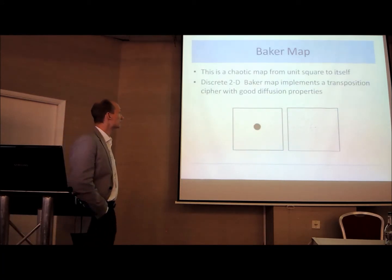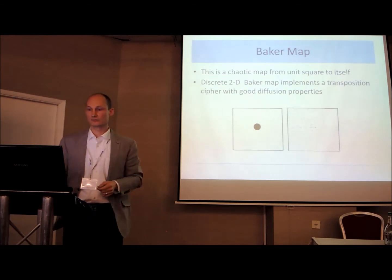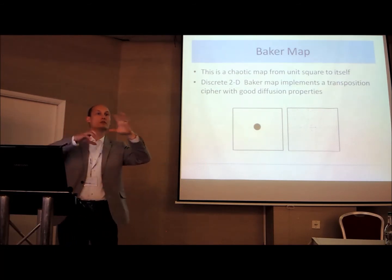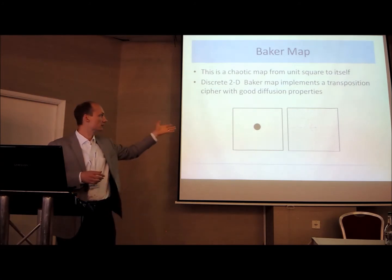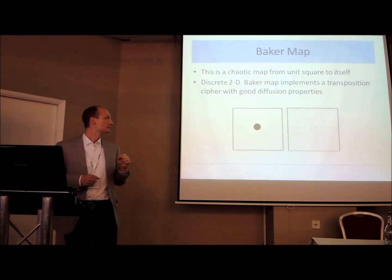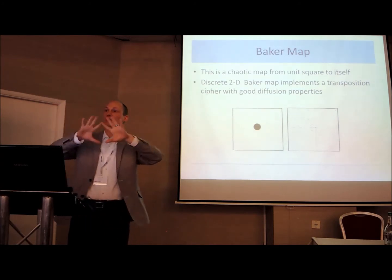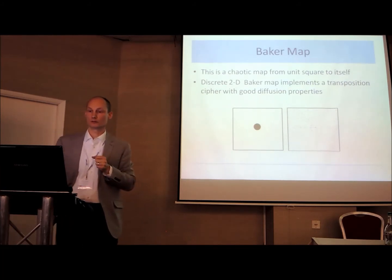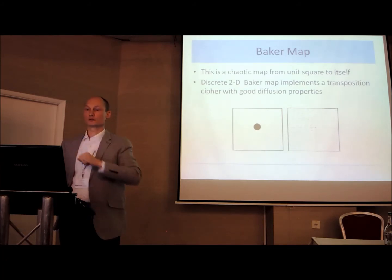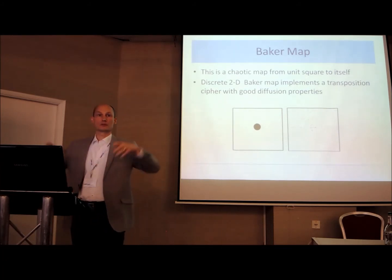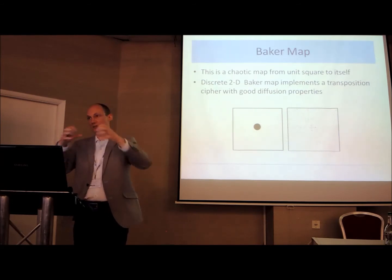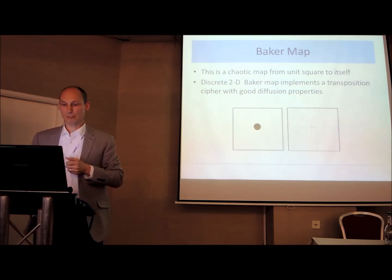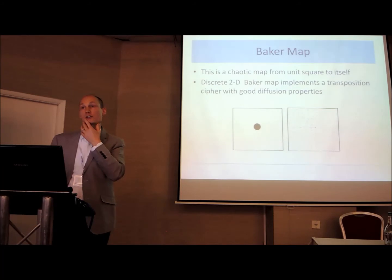Secondly, the Baker map. It's a chaotic map from the unit square to itself, and it has very good diffusion properties — meaning it moves things around in a very good way. For example, if you look at this image with the round circle in the middle, applying the map basically completely disperses it. The key we use here has to do with the properties of the slices used in the Baker map. The name 'Baker map' comes from thinking of dough that you slice up and knead together again — a convenient tool to implement a transposition cipher.